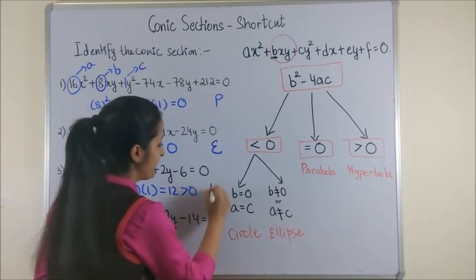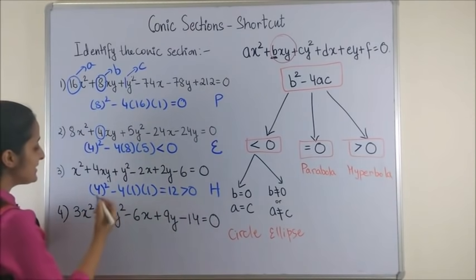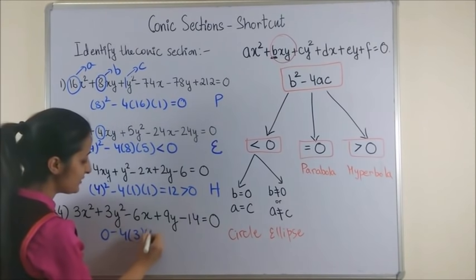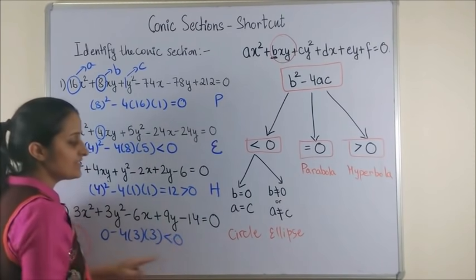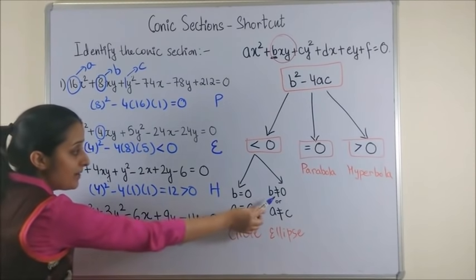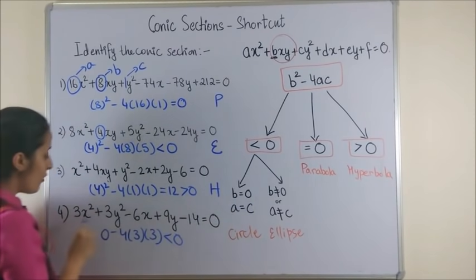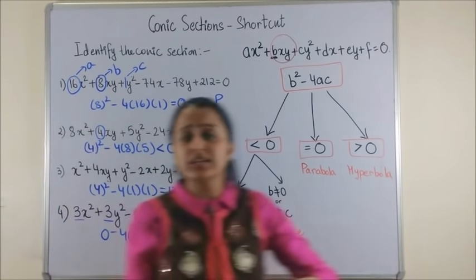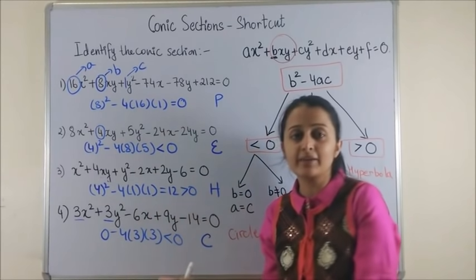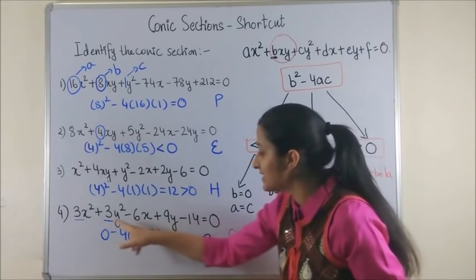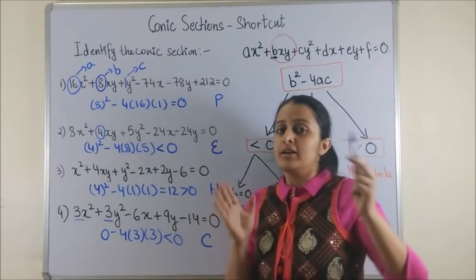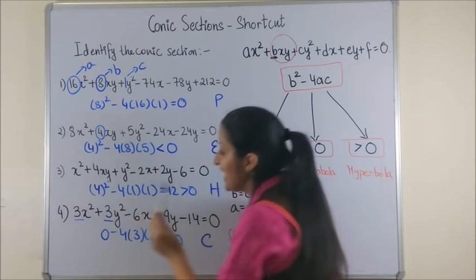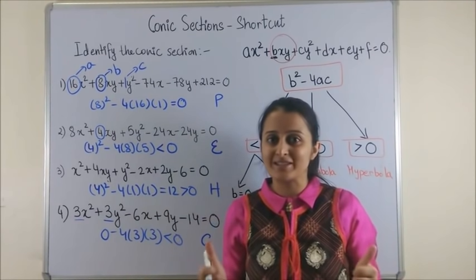And the last one, it says b² but there is no b², so it's 0 - 4 into a into c, which is less than 0. Now for less than 0 and b is equal to 0, also a is equal to c, so you realize this is a circle. You need not find even a discriminant in this case because there is no term of xy, so it is bound to be a circle. And secondly, your a and c happen to be the same. Wasn't this super simple?